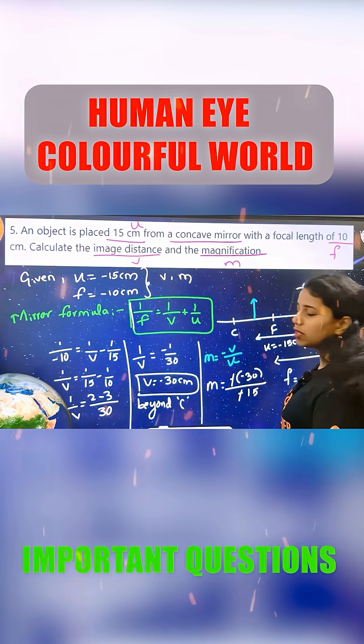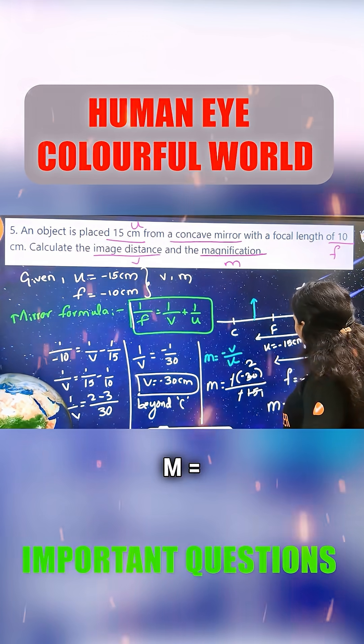So minus 1 minus 1 minus point, 15. So M is equal to minus 2.